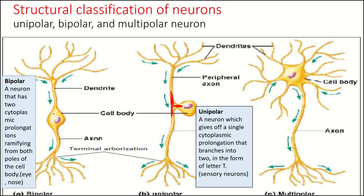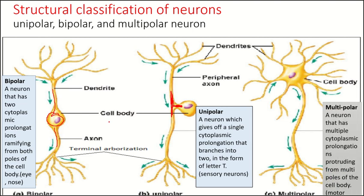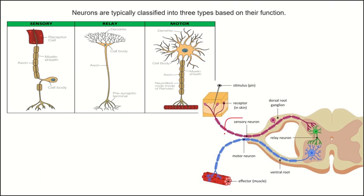The second structural type are bipolar neurons. A bipolar neuron has two cytoplasmic prolongations from both poles of the cell body, as you can see here. Bipolar neurons are found mainly in our eyes and nose. The third type are multipolar neurons, which have multiple cytoplasmic prolongations protruding from multiple poles of the cell body. Motor neurons are mainly multipolar. As shown, the sensory neuron here is unipolar — only a single cytoplasmic prolongation — while the motor neuron is multipolar.